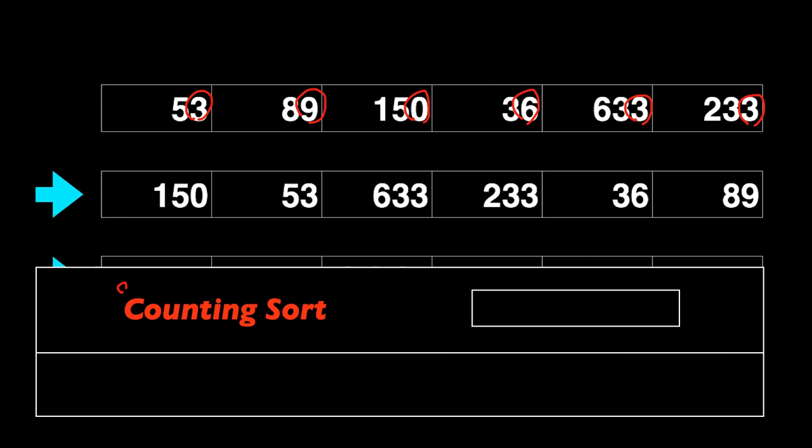And the key thing to remember here is that counting sort is a stable sorting algorithm. And so the values with the same keys, in this example 53, 633, and 233, they appear in exactly the same order in the sorted array as they do in the original array. And it's really important to use a stable sorting algorithm as a subroutine for radix sort, because if we used an algorithm that's not stable, it just wouldn't work.